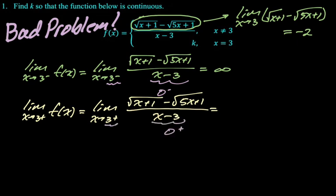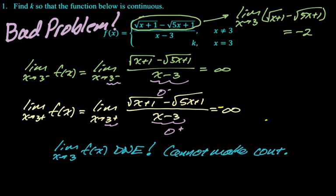And then I looked at from the other side. The numerator is still going to negative 2. Our denominator is approaching 0 from the positives, so we have - well this should be negative infinity, because we have negative 2 and then 0 through the positives. Overall that means this limit does not exist. You cannot make it continuous, there is no value of k.